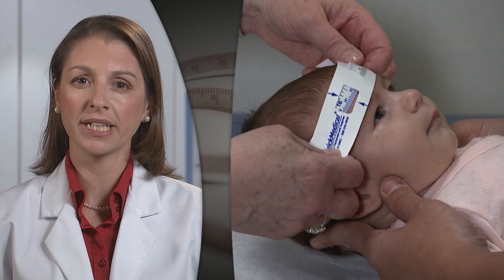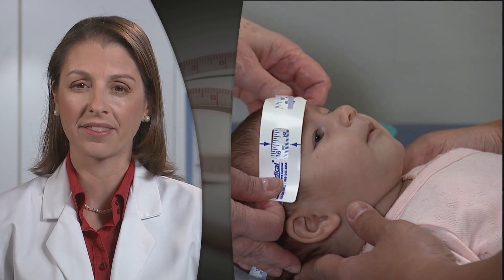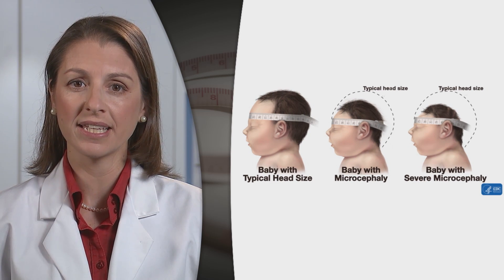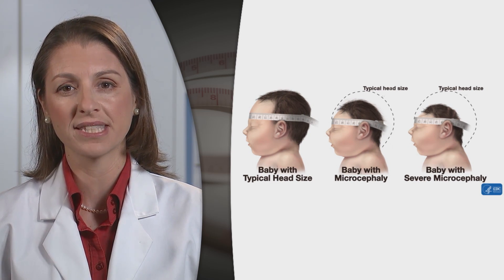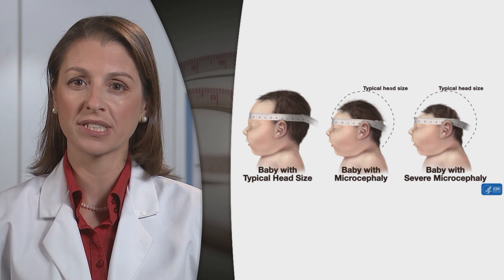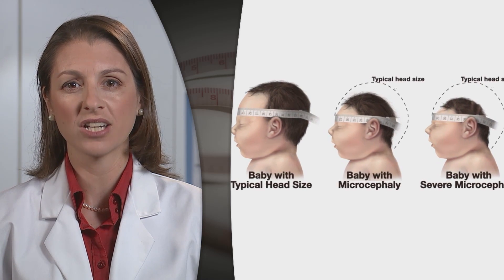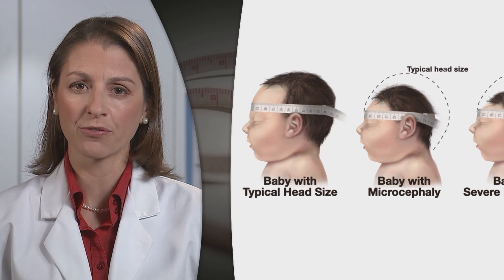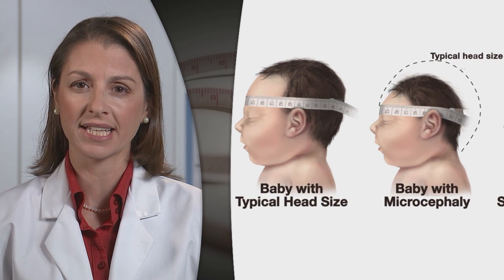This video will show clinicians how to measure an infant's head and length. Microcephaly is a birth defect in which an infant's head is smaller than expected when compared with infants of the same sex and age or the same gestational age. Microcephaly is typically defined as an occipital frontal circumference, or head circumference, below the third percentile for gestational age and sex.